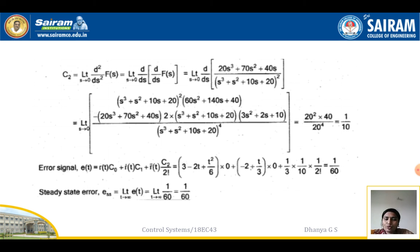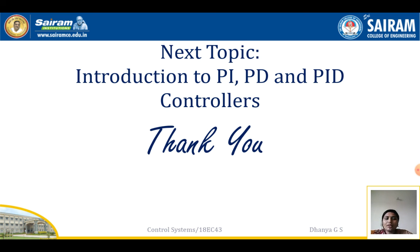Substituting into the error equation: e(t) = (3−2t+t²/6)·0 + (−2+t/3)·0 + (1/3)·(1/10)·(1/2!) = 1/60. The steady state error is ess = limit t→∞ e(t) = 1/60, since there is no t term. All sample problems have been solved; the next topic will be PI, PID, and PD introduction.